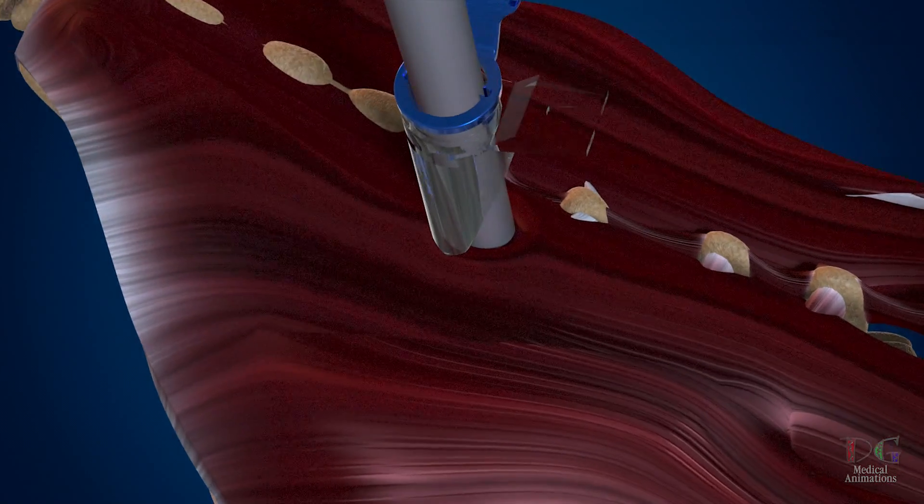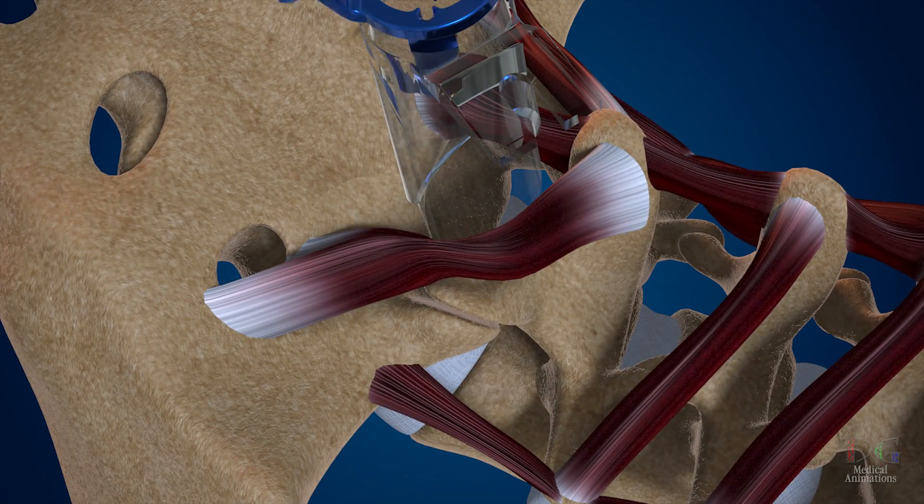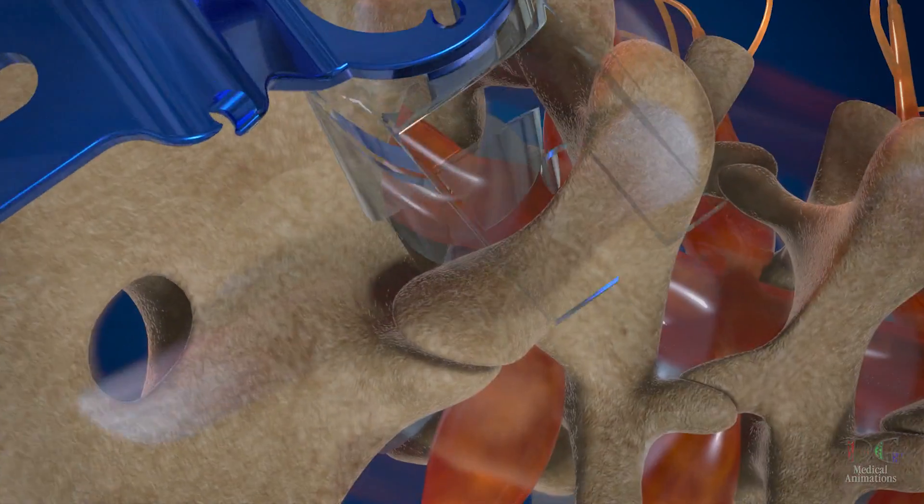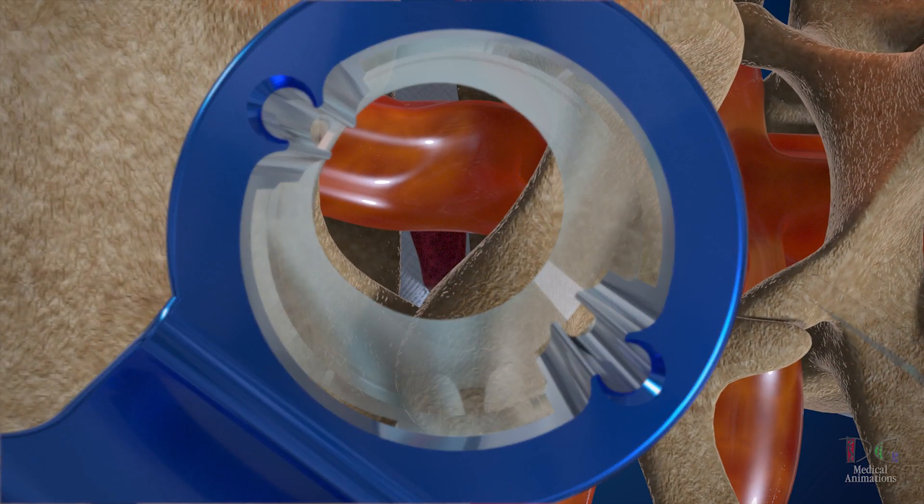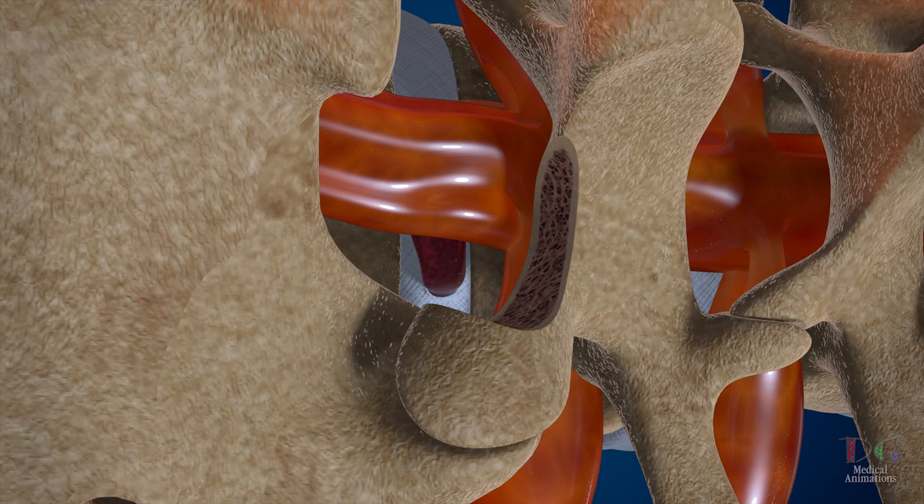After the back muscles are lifted off the lamina of the spine, and don't worry, they will not need to be cut, the surgeon will be able to enter the spinal area. A small piece of the facet joint may need to be removed for surgical access and to relieve pressure on the nerve.